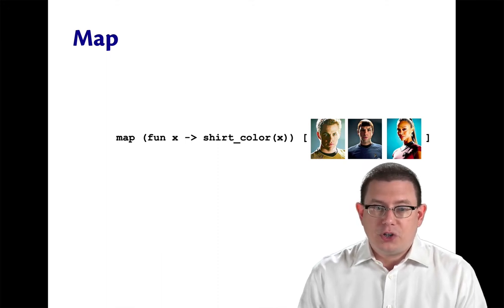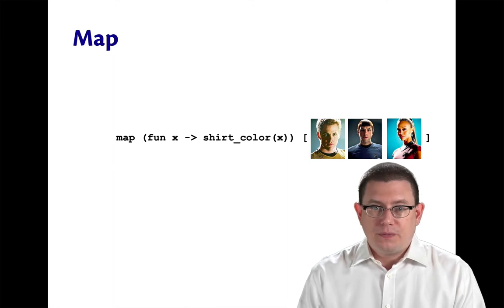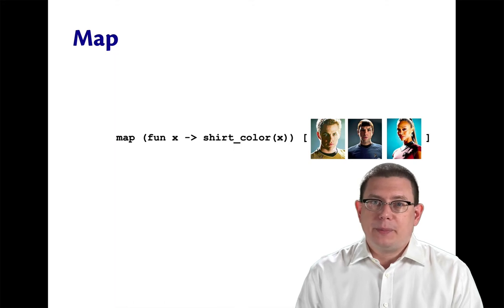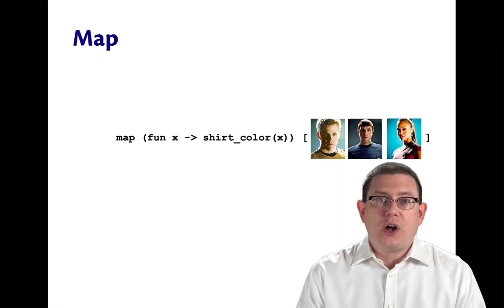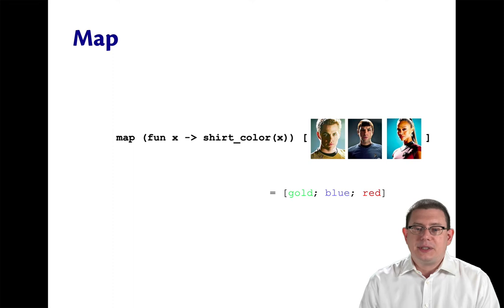So the idea of the map function is that you take map, and if you pass it a function and a list, it's going to apply that function to every element of the list and give you back the resulting list. So if you pass in a function that gives you a shirt color for a given character, then it's going to give you back the list that says gold, blue, red for their shirt colors.